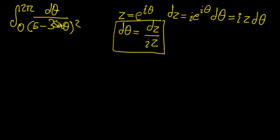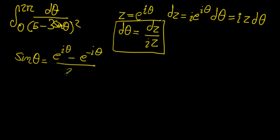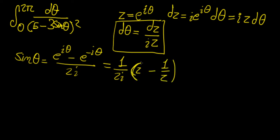Since we have a sine theta in this function, we use the identity: sine theta equals e^(iθ) minus e^(−iθ) over 2i. Replacing the exponential functions by z, this becomes 1 over 2i times (z minus 1 over z).